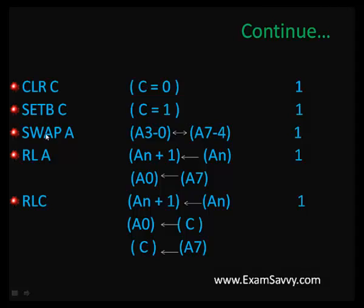SWAP: if you want to swap lower nibble and upper nibble, use SWAP. It swaps bits 0-3 (lower nibble) and bits 4-7 (higher nibble) of the accumulator. The size is 1-byte.